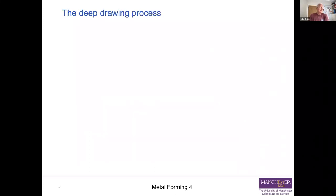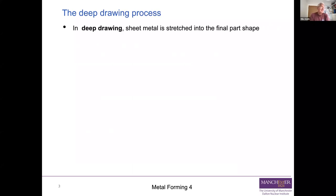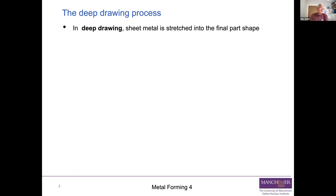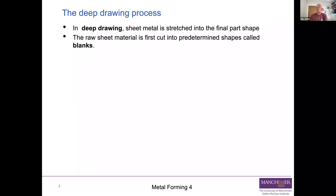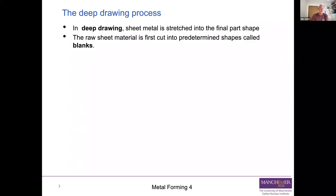Deep drawing itself as a process: you take a piece of sheet metal and you stretch it into its final part shape. So it's not like extrusion, which takes a billet, and it's not like forging. It takes a piece of sheet metal and changes its shape into a thin-walled part. You start off by cutting your raw rolled sheet material into a set of predetermined shapes, which we call blanks. That shape will depend upon the form of the component you're proposing to make and the shape of the die.